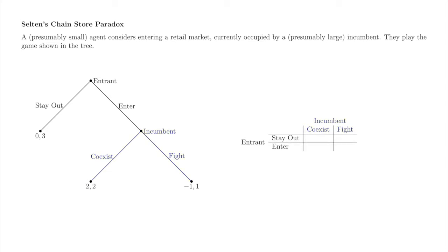Now we'll fill in these four boxes with the appropriate payoffs. Suppose the entrant plays stay out and the incumbent plays coexist. The induced path of play is that the entrant stays out and the game ends. Payoffs are zero to the entrant and 3 to the incumbent.